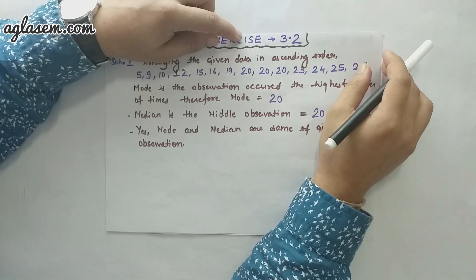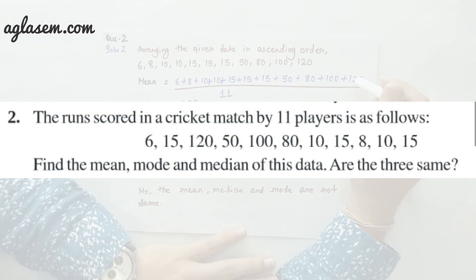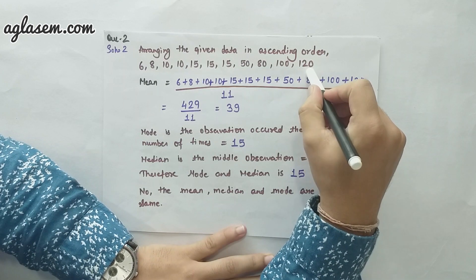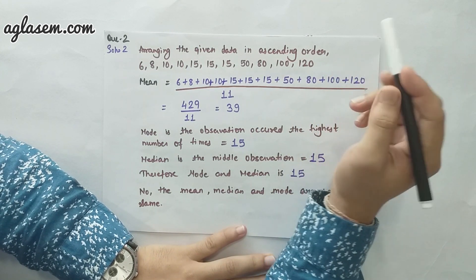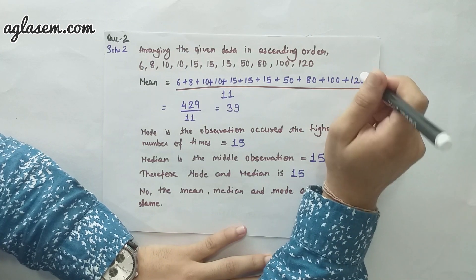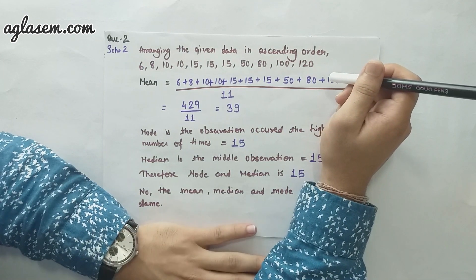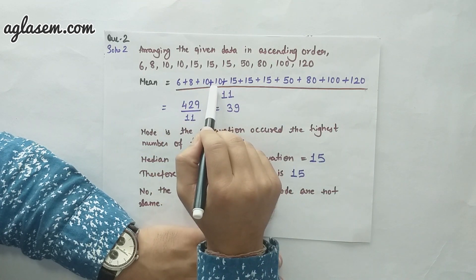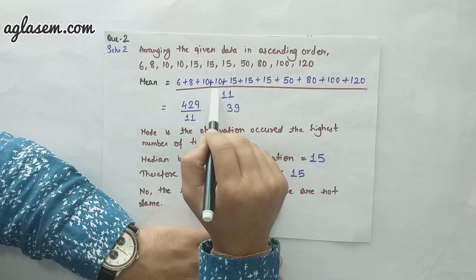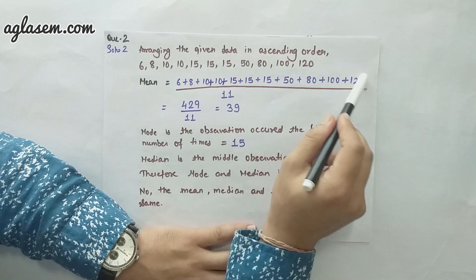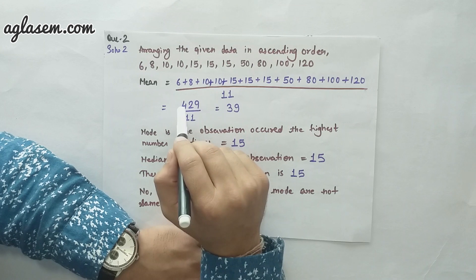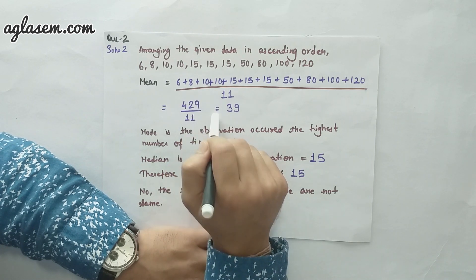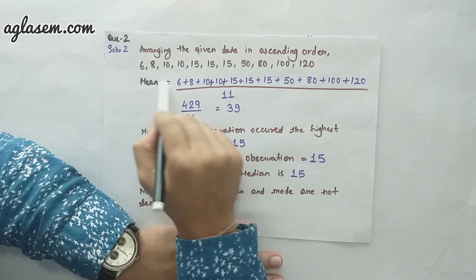Let's move to the second question. The second question is: the run scores in a cricket match by 11 players are as follows — you can see the data here. I have arranged it in ascending order because it helps to solve the question. We have to find the mean, median, and mode. First, we will calculate the mean. For the mean, we take the sum of the scores divided by the number of players. The sum of the scores is 429, divided by 11 because 11 players played this game. 429 divided by 11 is 39. So 39 is the mean.